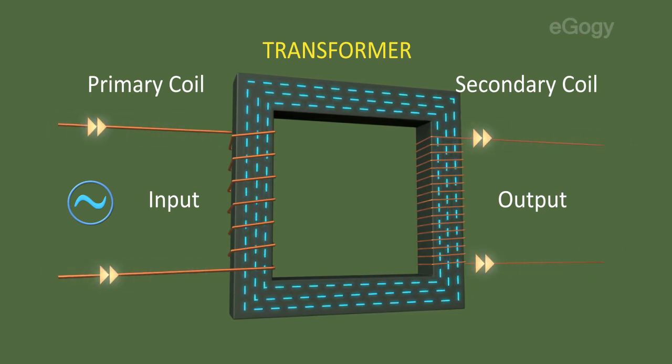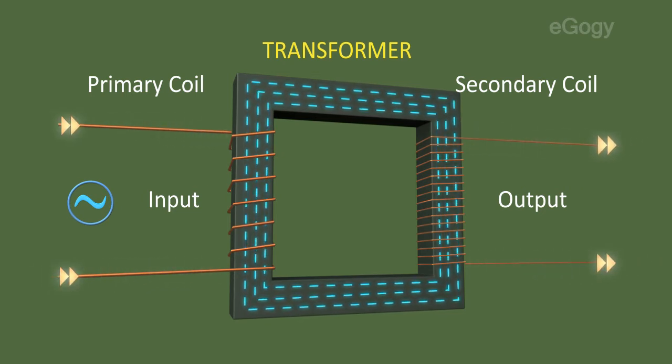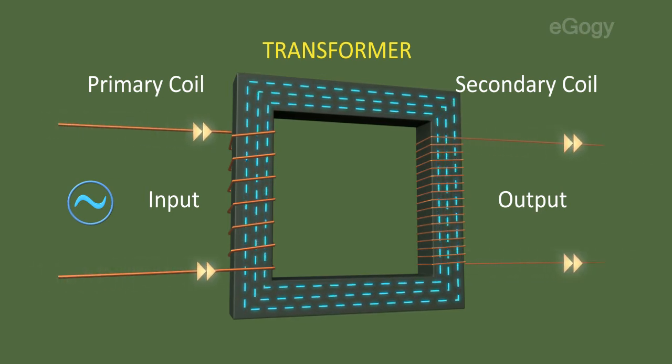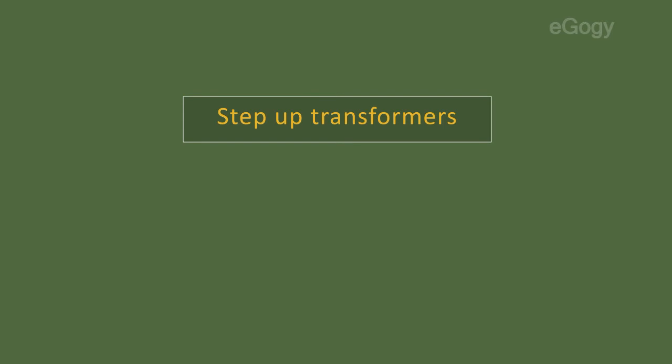Thus, because of electromagnetic induction, the electrical energy from one coil transfers to another. Generally, there are two types of transformers. They are step-up and step-down transformers.